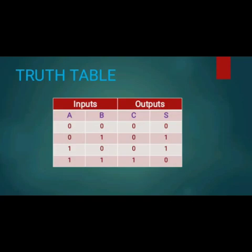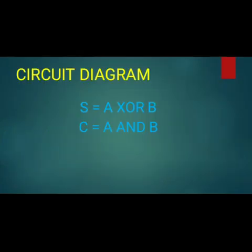If both inputs are zero, then both outputs will be zero. If A is 0 and B is 1, then sum is 1 and carry is 0. If A is 1 and B is 0, then sum is 1 and carry is 0. If both inputs are 1, then sum is 0 and carry is 1. This is the truth table of a half adder. The circuit diagram shows that the half adder is a combination of an AND gate and an XOR gate, giving us: Sum = A XOR B, and Carry = A AND B.